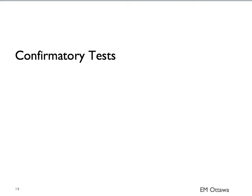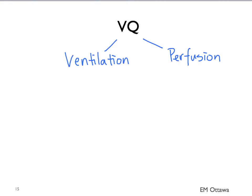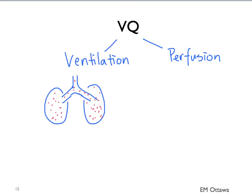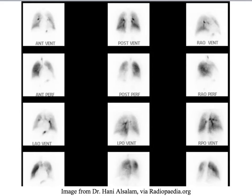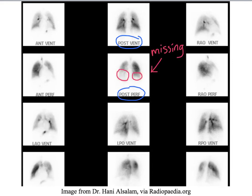The next tests are usually used for confirmation of PE. The first is a VQ scan, which stands for Ventilation Perfusion Scan — a test done by nuclear medicine. The patient inhales air containing a radionuclide, which enters the air spaces of the lungs. During the perfusion phase, we inject a radionuclide intravenously to look for blood flow in the lungs. In patients with PE, there will be a part of the lung that has ventilation but no blood flow. Looking at this VQ scan example, we can see lack of blood flow in the basal part of the lungs, which is highly suggestive for a PE.